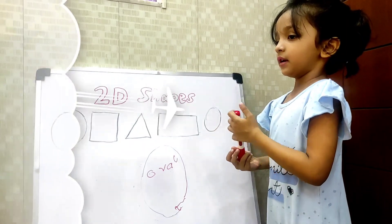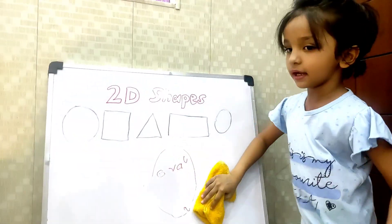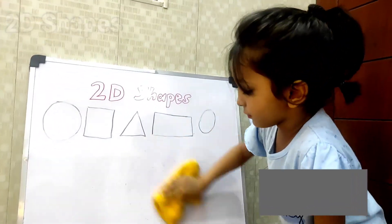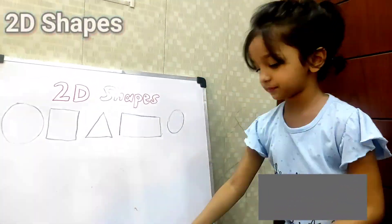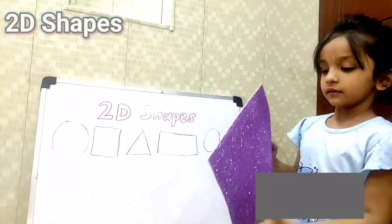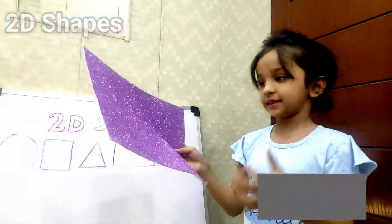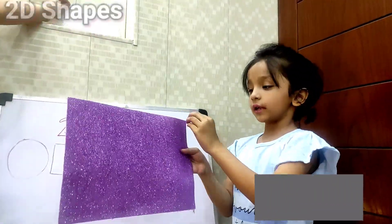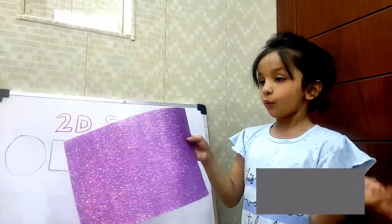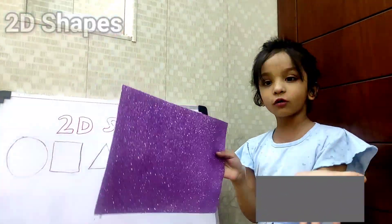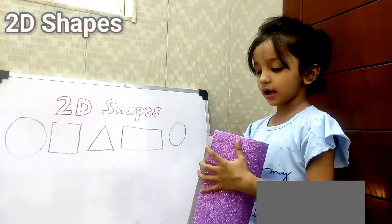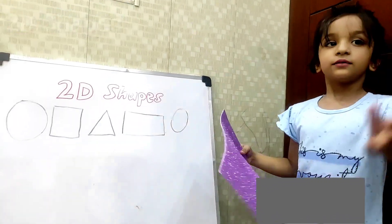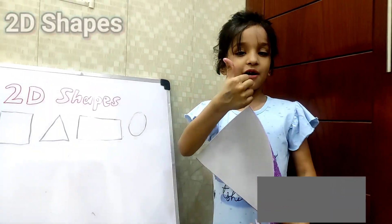Our next shape is Rectangle. Rectangle has 2 long sides and 2 small sides, and 4 corners. It's like a square but too long — too long and too small.